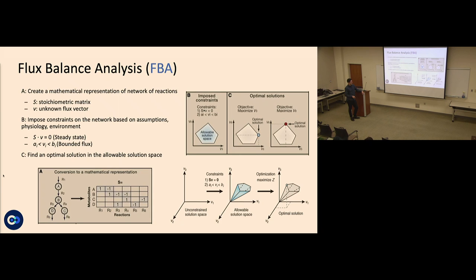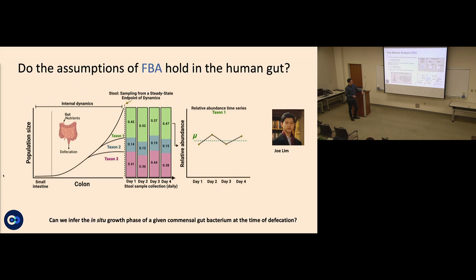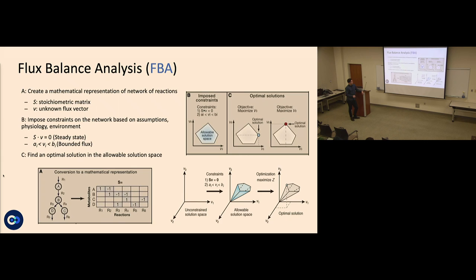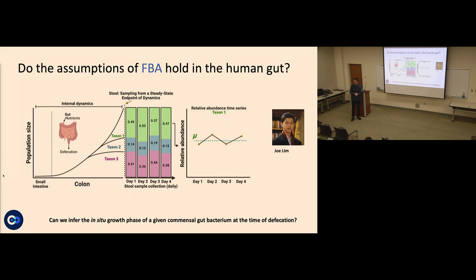Usually what we maximize for in bacteria is biomass production — that tends to be a decent assumption since bacteria like to grow fast and maximize biomass. But all of this assumes steady state, that bugs are growing more or less exponentially. Is that actually the case? Are bacteria still actively growing in the gut? We just had a paper out in Nature Communications — Joe Lim is the first author — where we explored what growth phase bacteria are actually in, in situ in the gut.